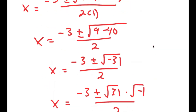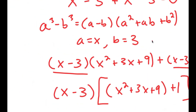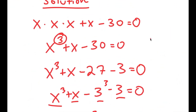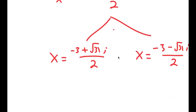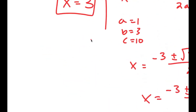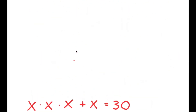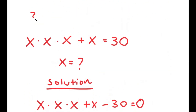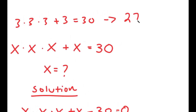Going back, my original equation was x times x times x plus x minus 30 equals 0. These two complex solutions can't really be checked and are not real solutions. But we can check x equals 3: plugging in 3, we get 3 times 3 times 3 plus 3 equals 30, which becomes 27 plus 3 equals 30, giving us 30 equals 30. That checks out.